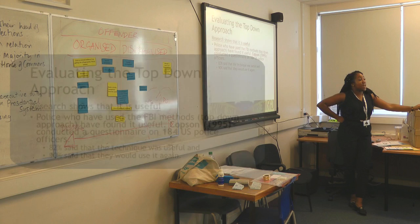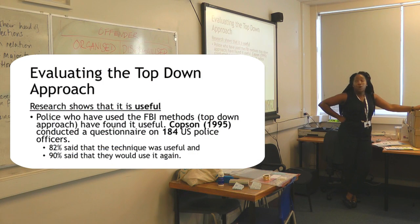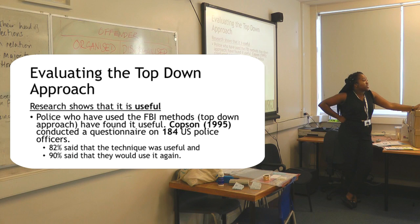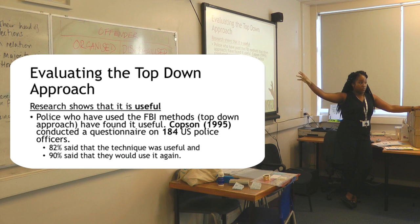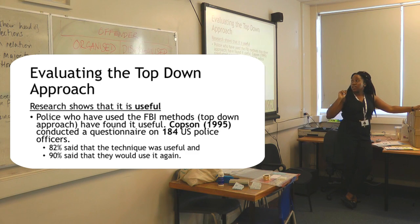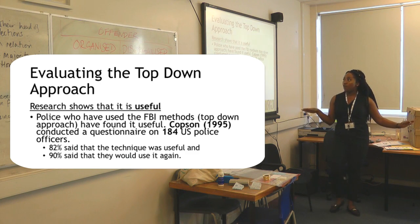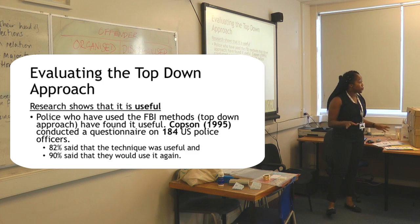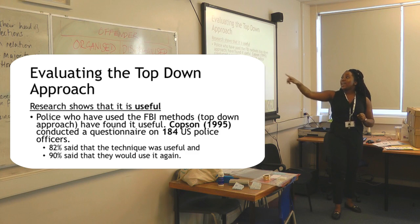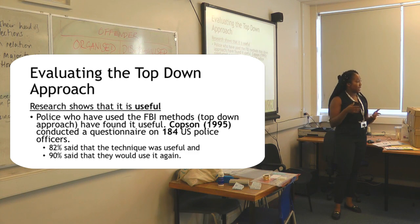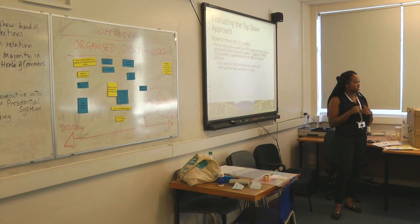Coxon conducted a survey on only 184 US police officers. How many states are there in the US? Fifty — there are 50 states. We have 184 US police officers, not from various states, just from one state. Already, red flag — evaluation point. He actually found that 82% of police officers said that the technique was useful, and 90% said that they would use this top-down approach again.